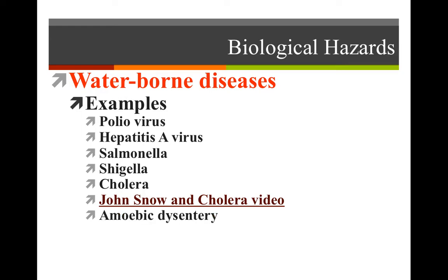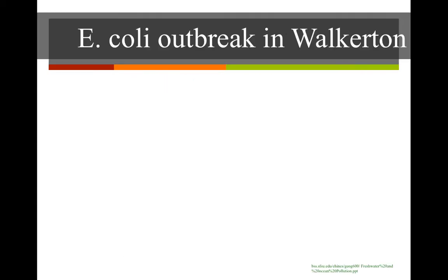Another waterborne illness is amoebic dysentery, dealing with a bug parasite in the water that gets ingested. Giardia is another rough one — a parasite found in water in developing countries. And Cryptosporidium is another one. All of these we'll look at later when we examine diseases.